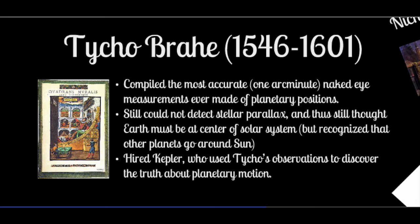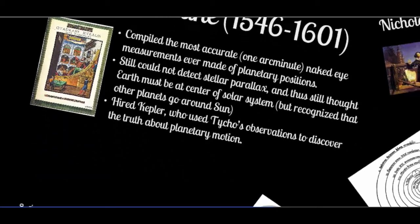The telescope had not yet been invented. He tried to model his data using a sun-centered system and was unsuccessful, so he proposed a system that had the sun orbiting the earth and all other planets orbiting the sun, but this didn't make sense to very many people. He did have the good sense to hire a young mathematician to help analyze his data, and that mathematician was Johannes Kepler.